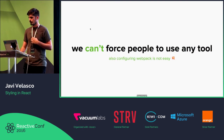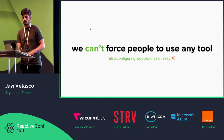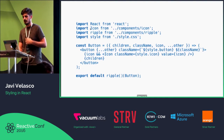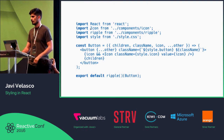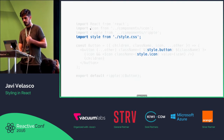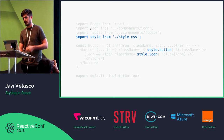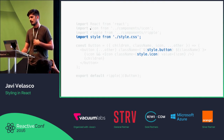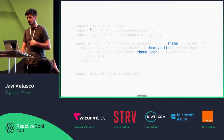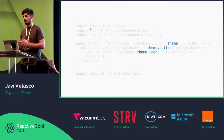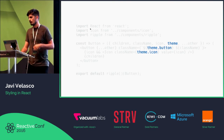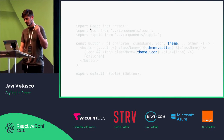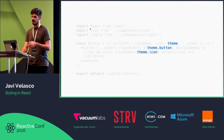First of all, configuration: we can't force people to use any tool, we can't force people to use CSS modules and also configure it — webpack is not easy at all. So in the first version of React Toolbox, that's how a component would look like. We are importing the style module straight and then using it to render the HTML. That's kind of problematic because if you don't have CSS modules properly configured, it's not going to work. So it's way better if you just get a theme property and use it in your render markup like this.